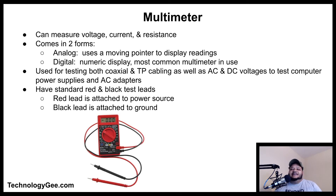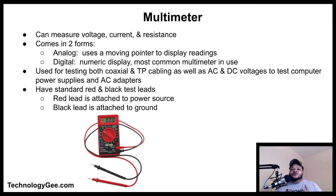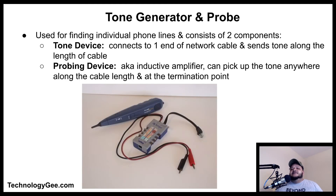A multimeter, also known as a multi-tester, is an electronic measuring instrument that combines several measurement functions in one unit. A typical multimeter can measure voltage, current, and resistance. Analog multimeters use a micro-ammeter with a moving pointer to display readings. Digital multimeters, the most common form today, have a numeric display and may also show a graphical bar. Multimeters can be used for testing both coaxial and twisted pair cabling, as well as AC and DC voltages to test computer power supplies and AC adapters. All multimeters have standard red and black test leads — the red lead is attached to the power source and the black lead to the ground.